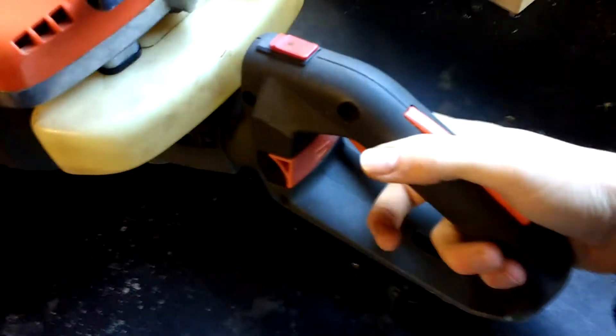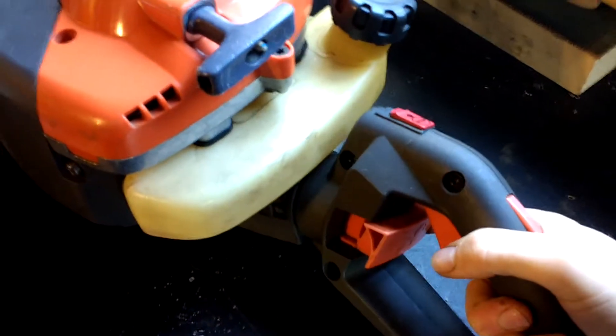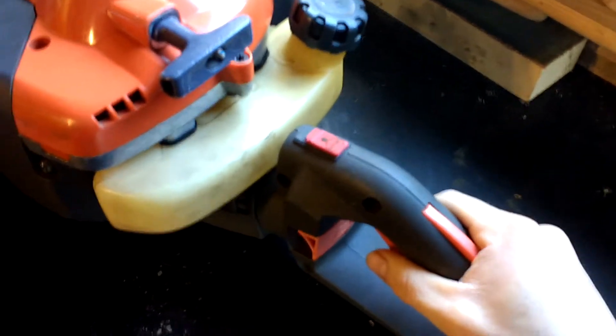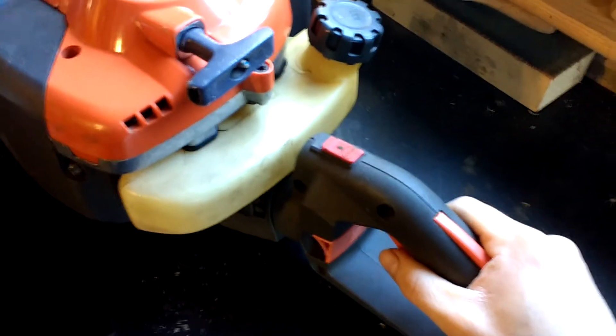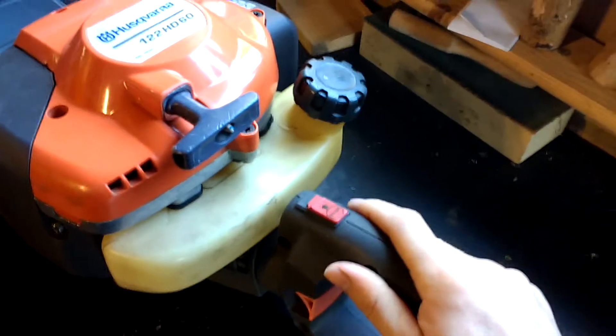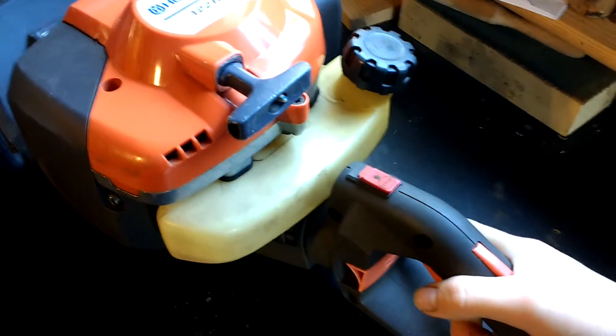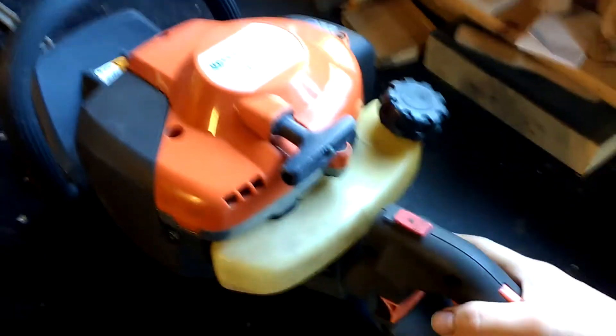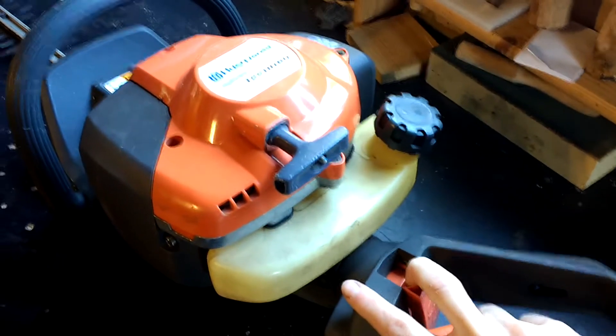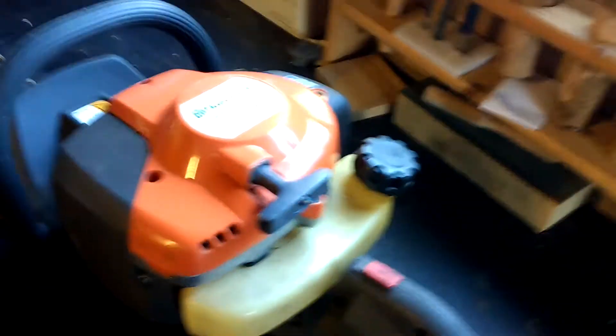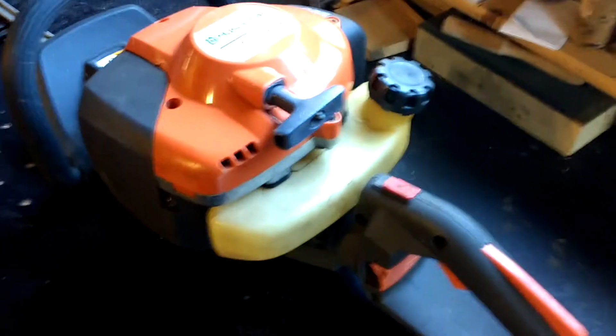You've got this swivel handle, which again for a domestic one is nice to have. A lot of the professional ones do have this and it does make it easier when you're going along a hedge to be able to twist this to the side, gets your hand out of the way of it. I really like that feature.